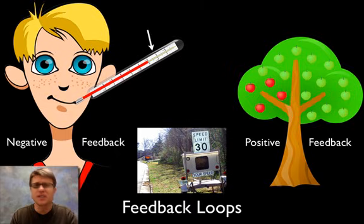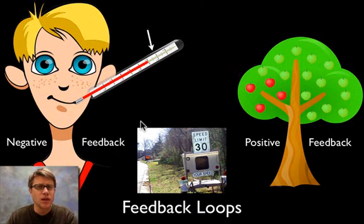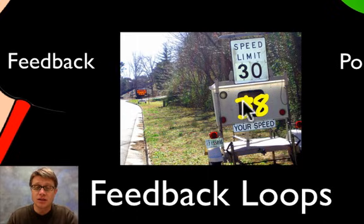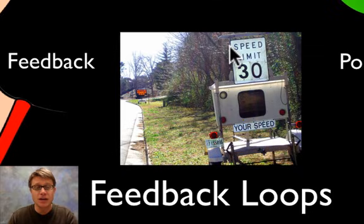Before we start, let's talk about what a feedback loop is. A feedback loop is when I'm taking and gathering information from the environment and then changing my behavior based on that. If you see a sign that says my current speed is 38, well I better slow down. And if it says my speed is 18, well then I better speed up. So I'm responding to that feedback from, in this case, a speed sign.